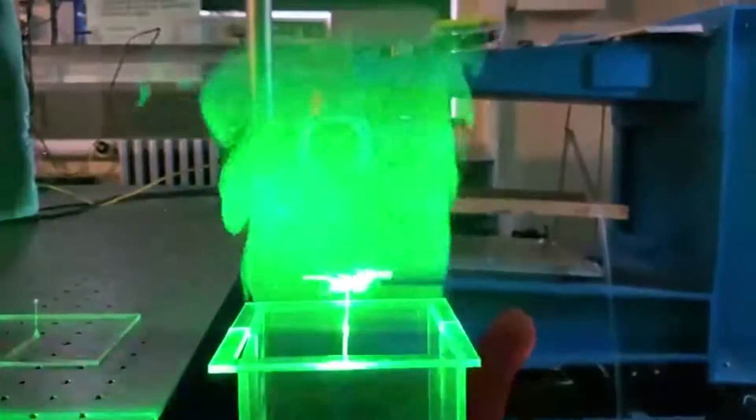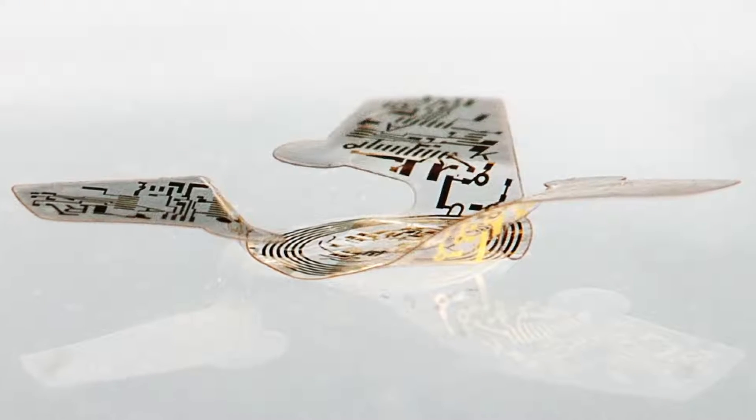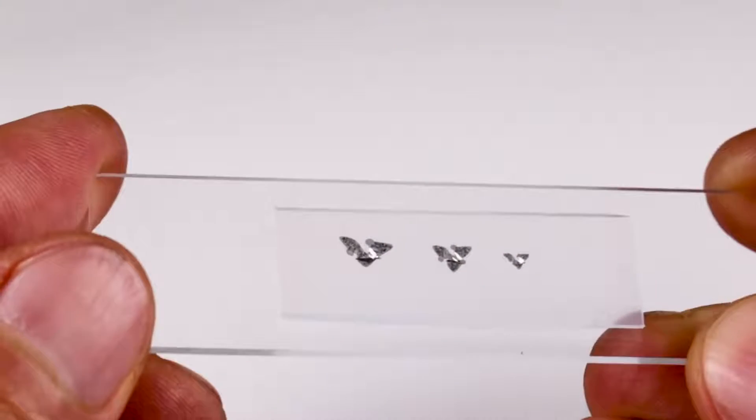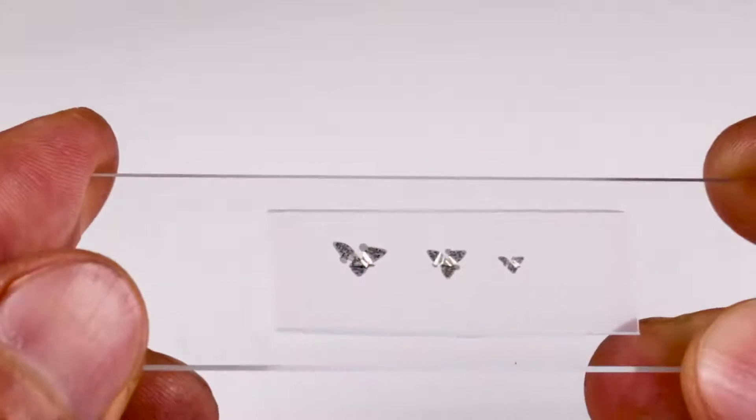So the objects that we've created consist of two parts. One is an electronic functional component that has an overall size scale in the range of one millimeter, so almost like a tiny grain of sand.